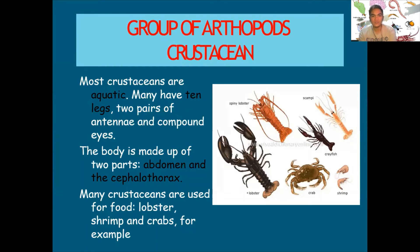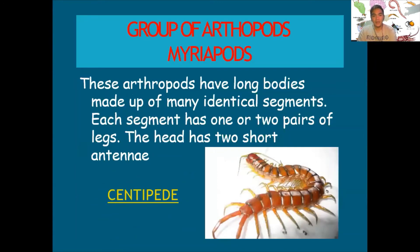Most crustaceans are aquatic. Many have ten legs, two pairs of antennae, and compound eyes. The body is made up of two parts: the abdomen and the cephalothorax. Many crustaceans are used for food, like lobster, shrimp, and crabs, which we can find in seafood restaurants.